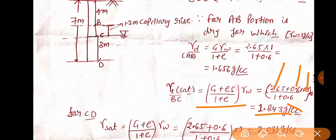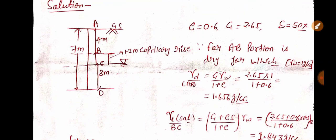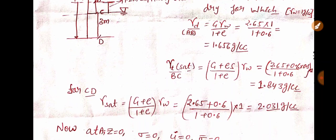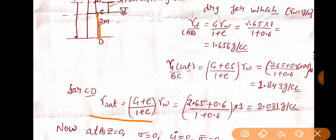So which portion are we talking about? For the BC portion, the gamma we will use is 1.843 gram per cc. Now let's talk about the CD portion. For the CD portion, the gamma value we will use is gamma saturated. Gamma saturated = (G + e) / (1 + e) × γw = (2.65 + 0.6) / (1 + 0.6) = 2.031 gram per cc. So till here we have calculated the densities for different portions.